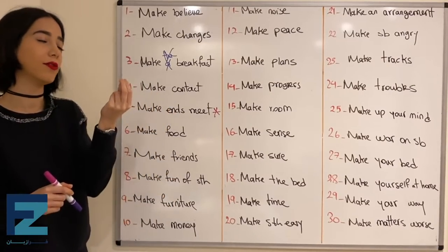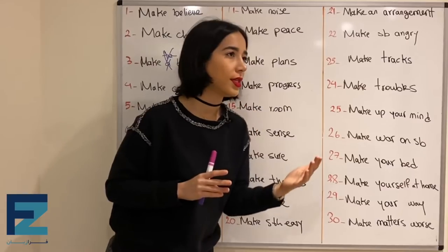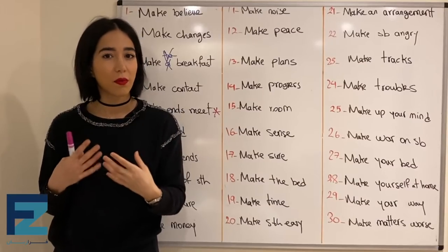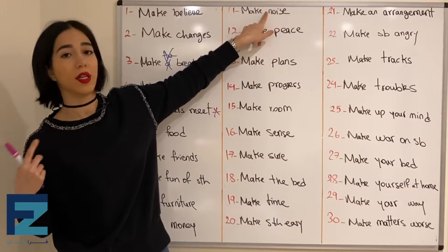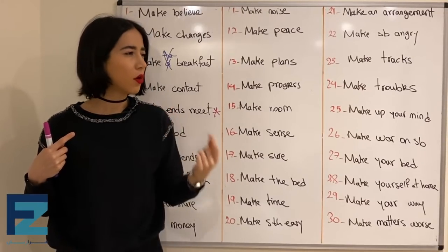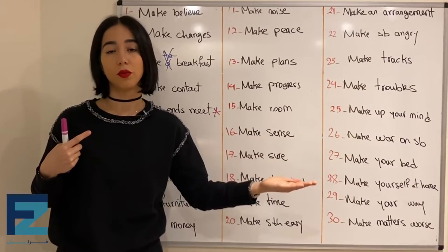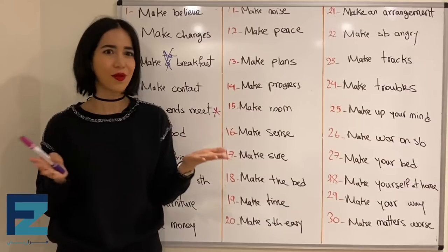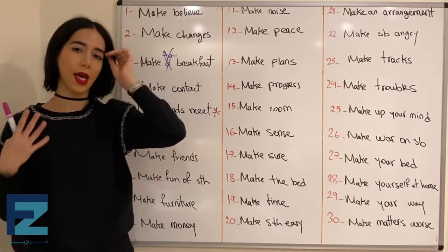Number ten: make money — to earn money from the job that you're doing, پول در آوردن. Make noise without article — سر و صدا ایجاد کردن. Don't make noise while you're eating soup. اگر article نداشته باشه یعنی سر و صدا درآوردن، not complaining.